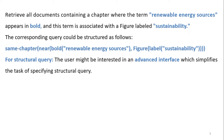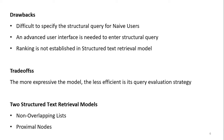The corresponding structural query could be: in the same chapter, 'renewable energy sources' in bold, and near that, a figure whose label is 'sustainability'. For structural queries, the user might benefit from an advanced interface that simplifies the task of specifying them. Drawbacks include: it is difficult for naive users to specify structural queries, an advanced user interface is needed, and ranking is not yet established in structural text retrieval models.